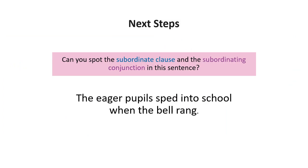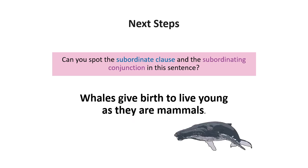Now let's spot the subordinate conjunctions and subordinate clauses in sentences. 'The eager pupils sped into school when the bell rang.' The subordinate clause is 'when the bell rang' — 'the eager pupils sped into school' makes sense on its own, and we add the subordinate clause. The subordinate conjunction is 'when'. Next: 'Whales give birth to live young as they are mammals.' The subordinate clause is 'as they are mammals' and the subordinate conjunction is 'as'.